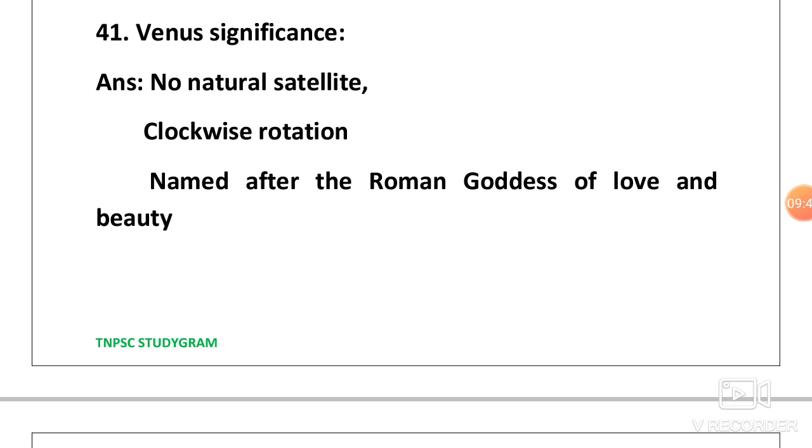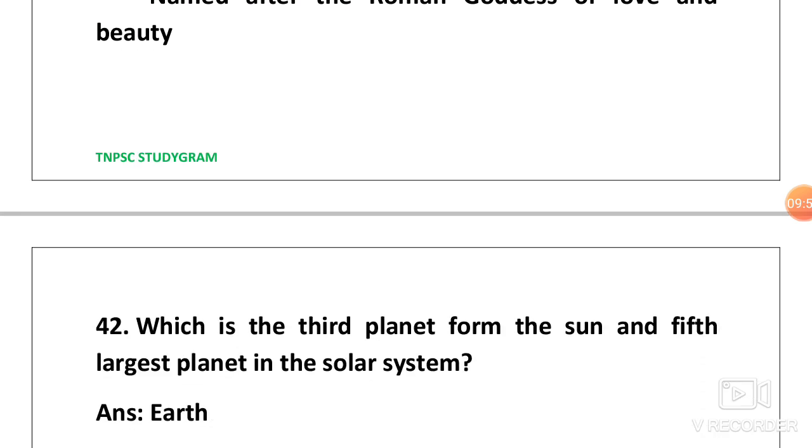Venus significance is it has got no natural satellite similar to Mercury and its rotation is clockwise. You have to remember UV. Venus and it is named after the Roman goddess of love and beauty.